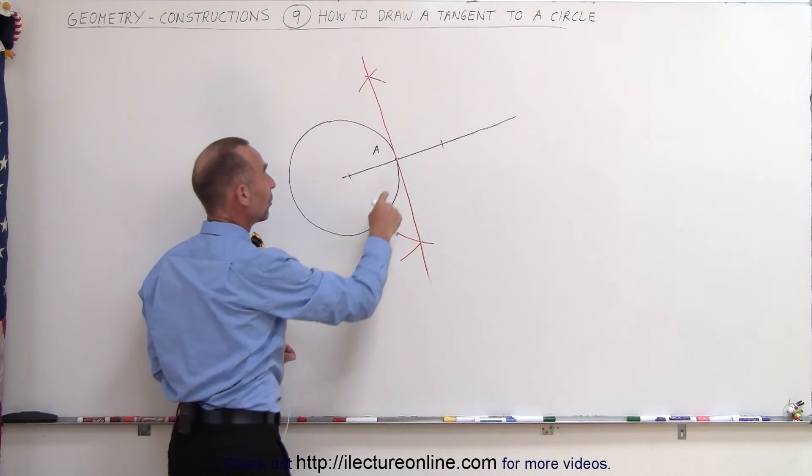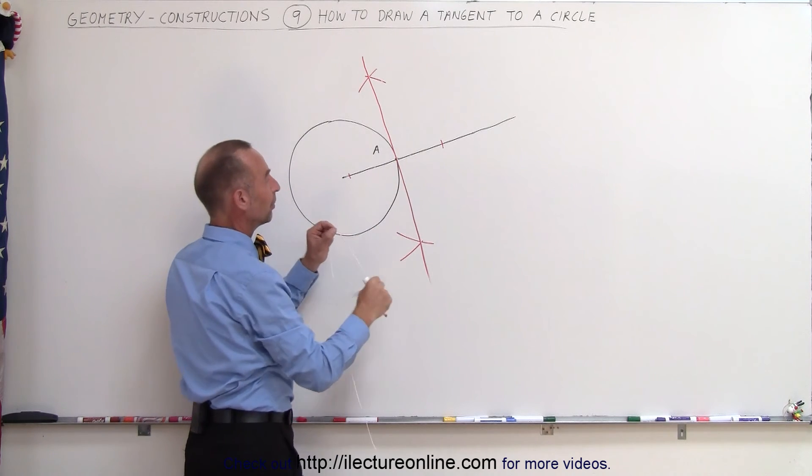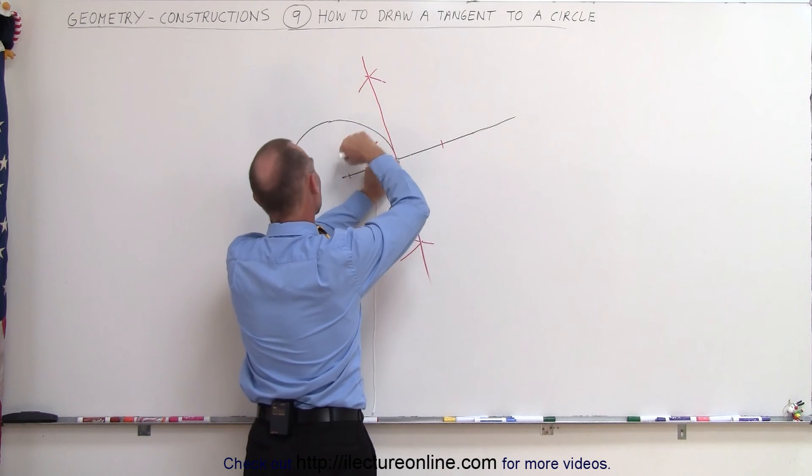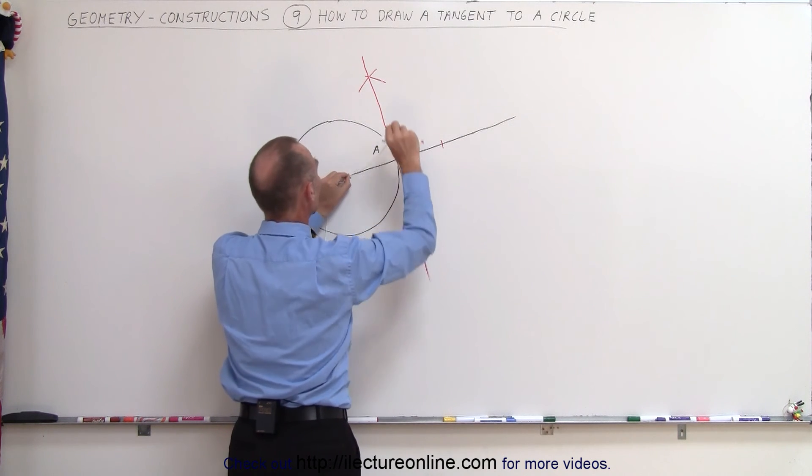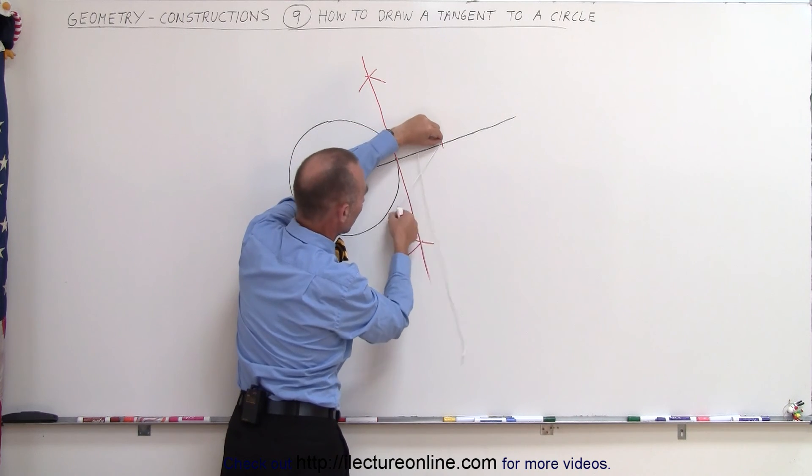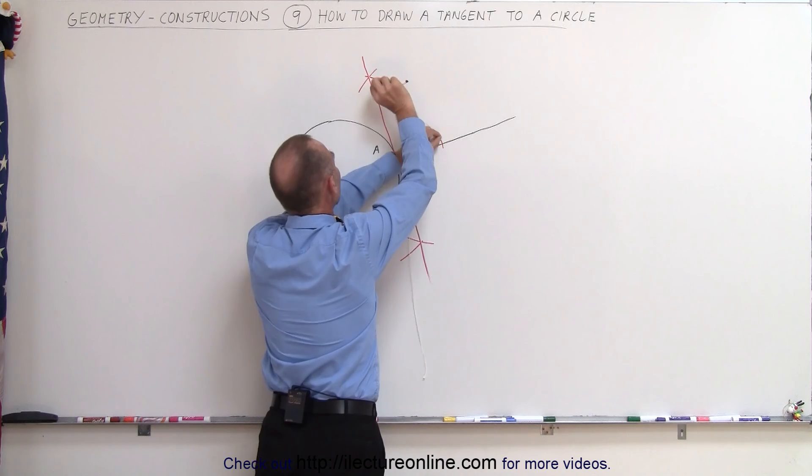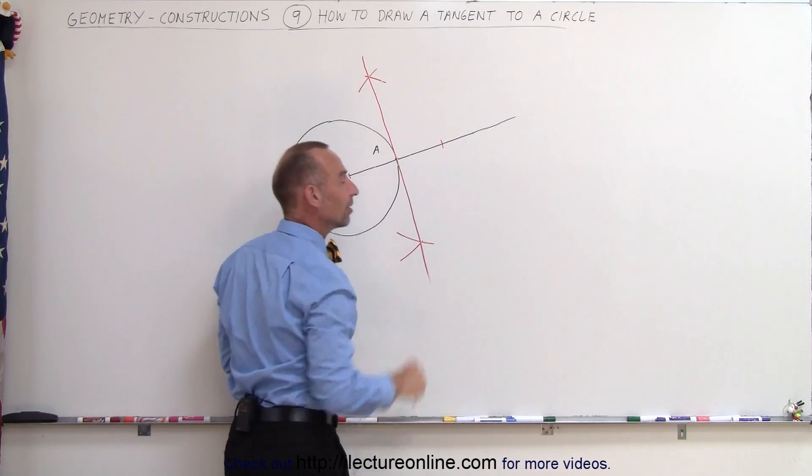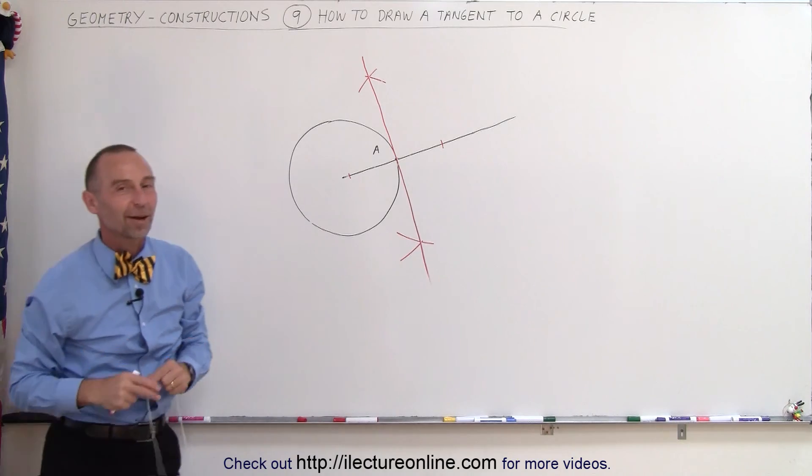Again, the way we do it is we pick the point and we get the compass. We draw an equidistant point on this line right here, over here and on the other side. Then we take that point, make our string a little bit longer. Draw a little arc this way, a little arc this way. Then we come over here, draw it again. Over here, draw it again. Then where those two meet, we draw a line through that and it will be tangent exactly at point A. That's how it's done.